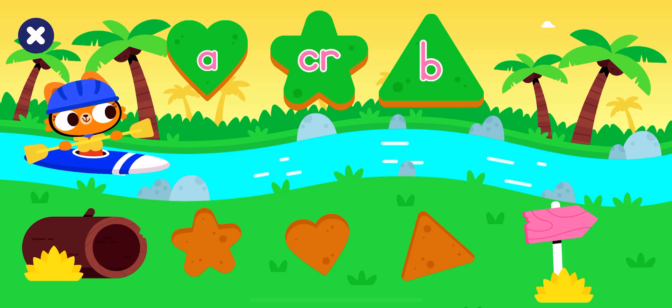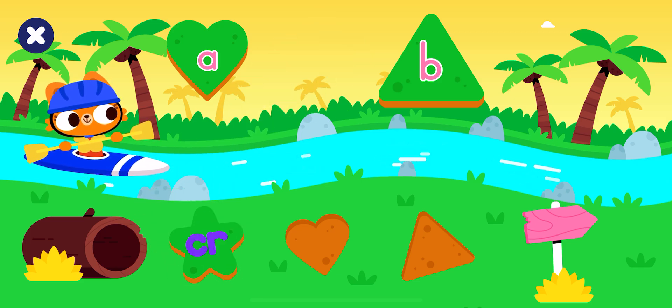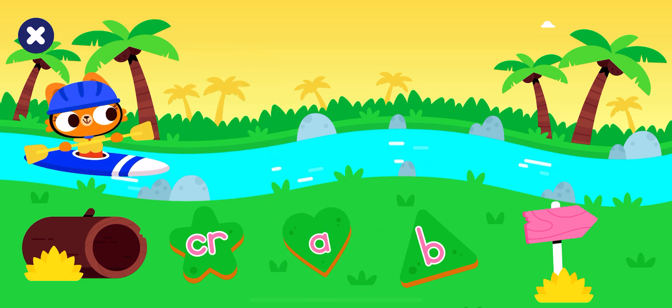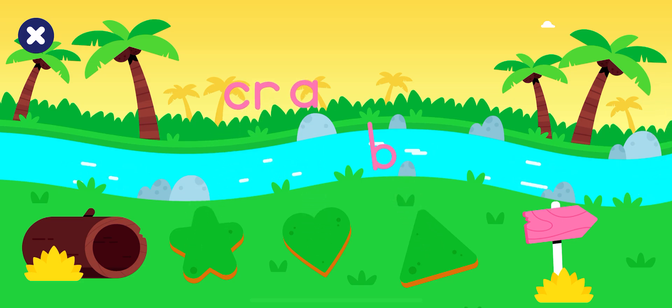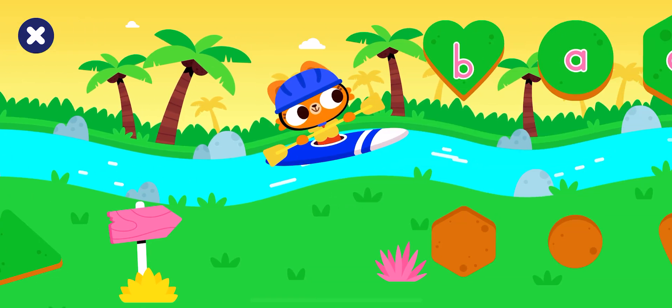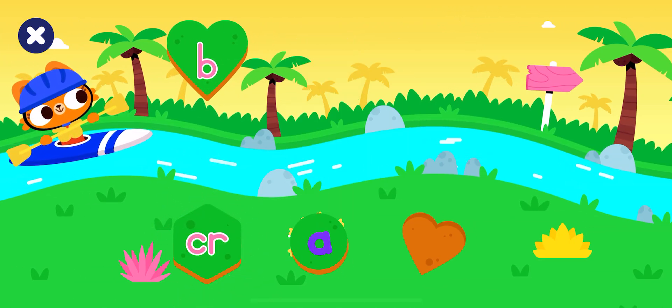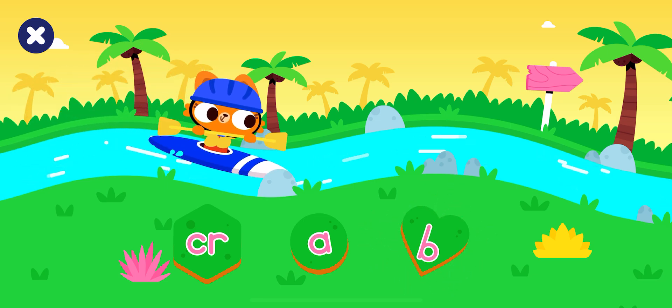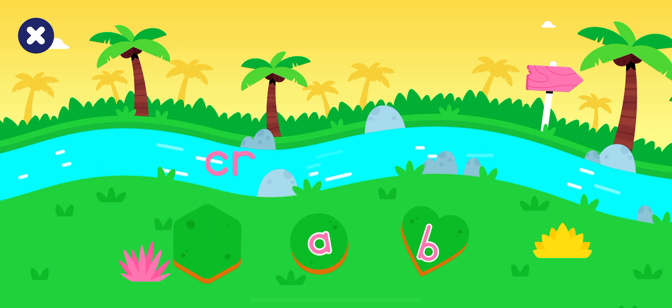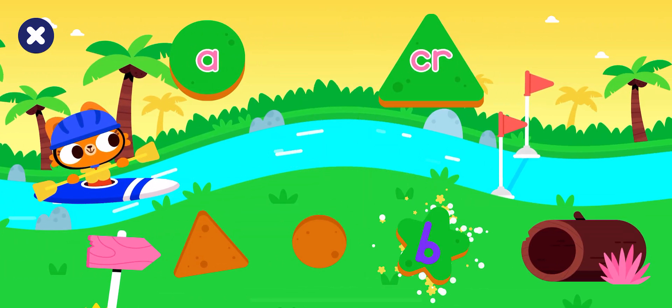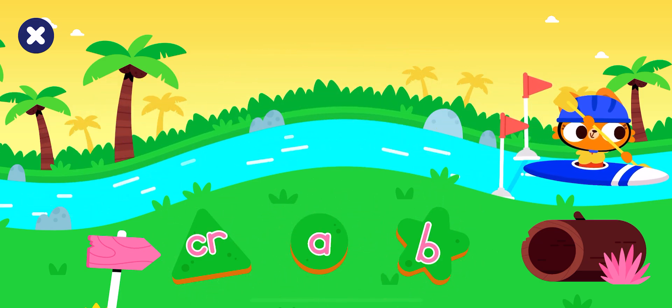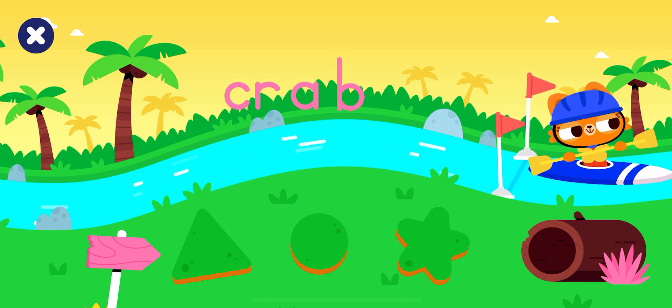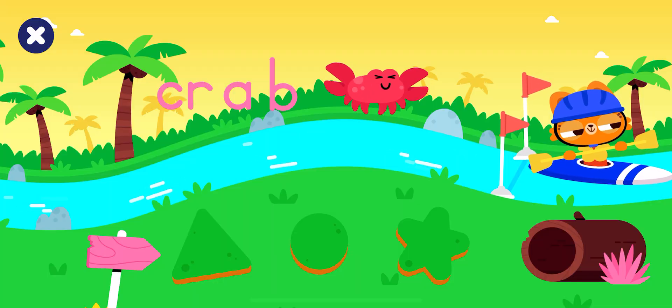Lisa wants to canoe down the river. Place the letters to help her go. Great job! C-R-A-B, crab. C-R-A-B, crab. Good job! Great job! Hooray! You made the word crab! Yay!